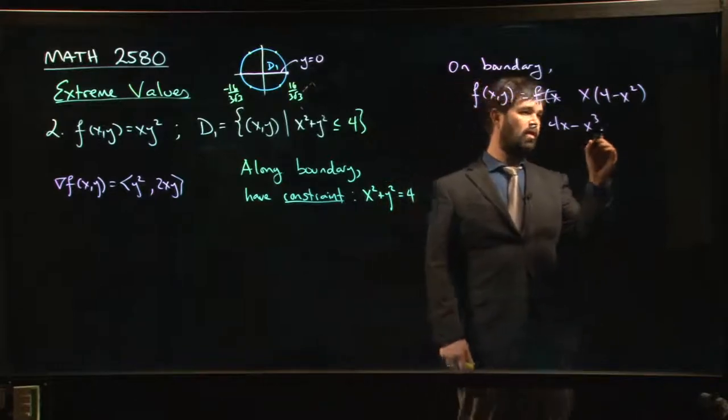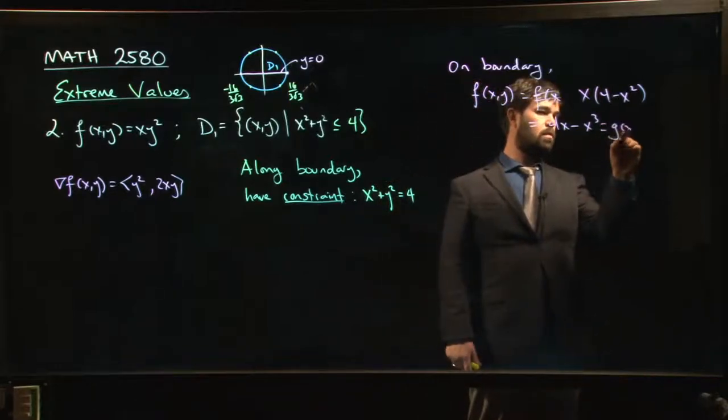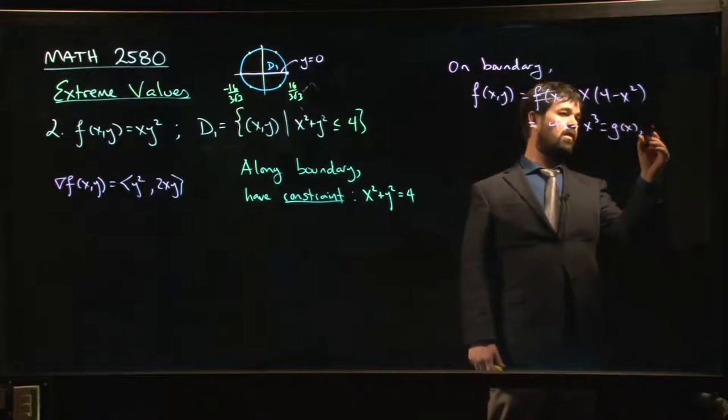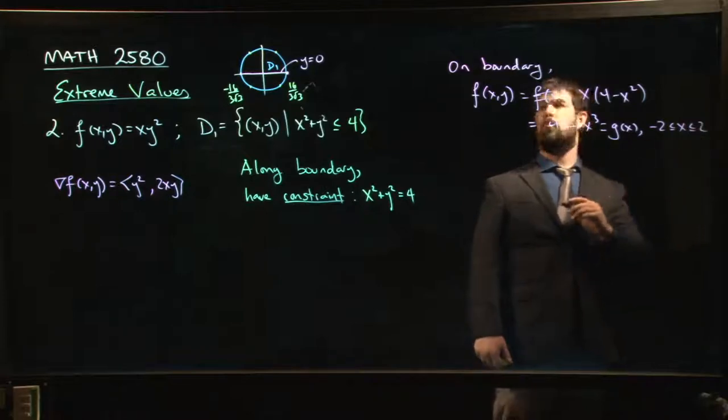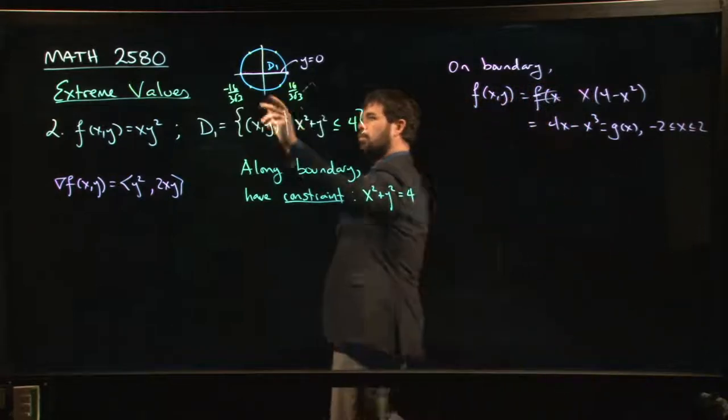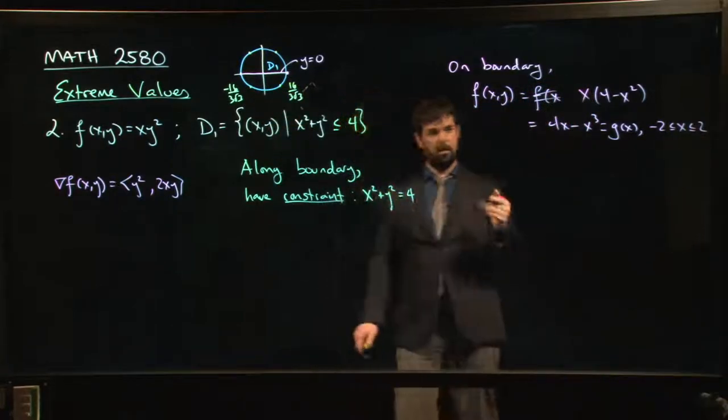And I know that x here can be between minus 2 and 2. X goes from minus 2 to 2 on a circle of radius 2.